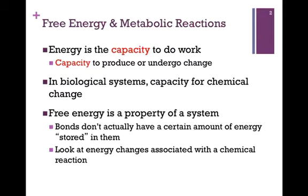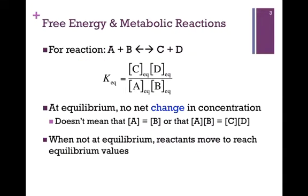So we look at these energy changes associated with a chemical reaction. In our simple reaction scheme, we combine reactants A and B to form products C and D, and we have an equilibrium expression for that. So we can define an equilibrium constant, KEQ, and that will simply be equal to the concentrations of products multiplied together divided by the concentrations of reactants multiplied together.